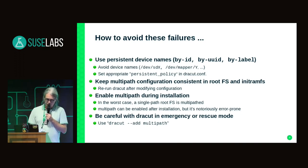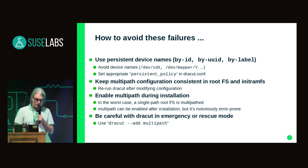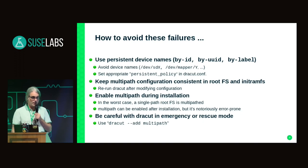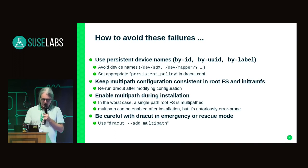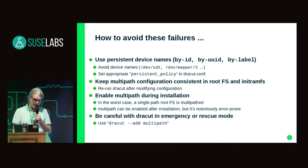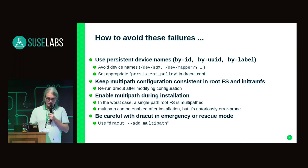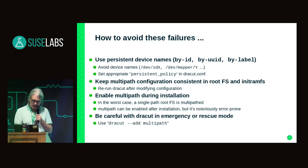I would always recommend to enable multipath during installation. When you install SLES you get a pop-up: 'Multipath device is detected, do you want to enable multipath?' Click yes — it's always the best choice. Because in the worst case you get a multipath root file system which is actually not multipath, and it doesn't hurt that much. Whereas enabling multipath after installation is a good way to shoot yourself in the foot — customers do that all the time. And last: we have to be careful when running Dracut in emergency mode or rescue mode, because in these modes multipath is usually not enabled, which means multipath will be missing in the initial RAM disk and has to be added explicitly.